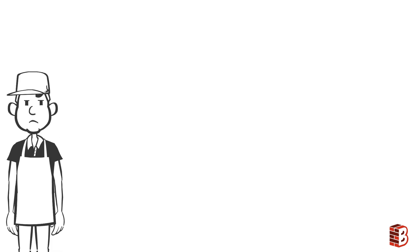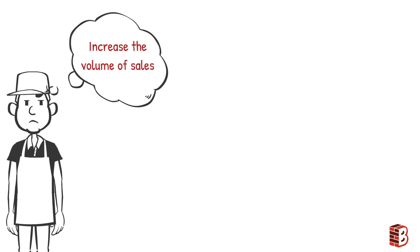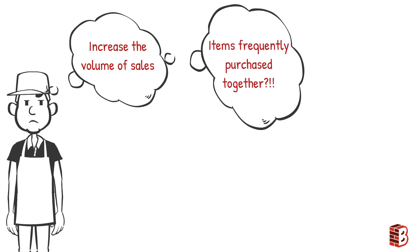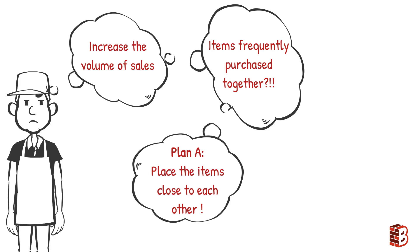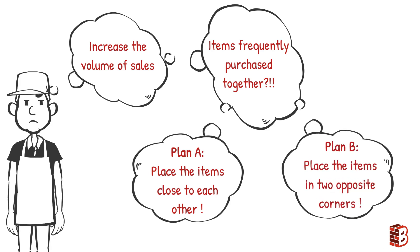Suppose that you are a grocery store manager and you are trying to find a way to increase the volume of your sales. So you decided to perform an analysis to identify the items that customers usually purchase together. You may plan to place these items close to each other in the store, giving a high possibility of customers buying the second item when they come in to buy the first. You may also plan to place these items in two exact opposite corners of the store so that customers walk through the store as much as possible, giving them the chance to purchase other items.